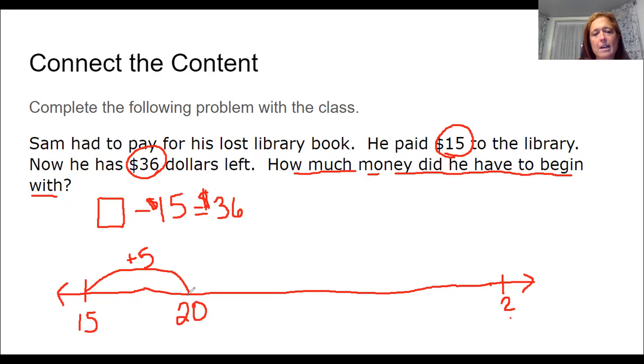Now I'm going to add 20 more. 20 plus 20 is 40. And now let's see, I've added 25. That's not 36 yet. So I think I'm going to add another 10. Add 10 here. So that gets me 50.